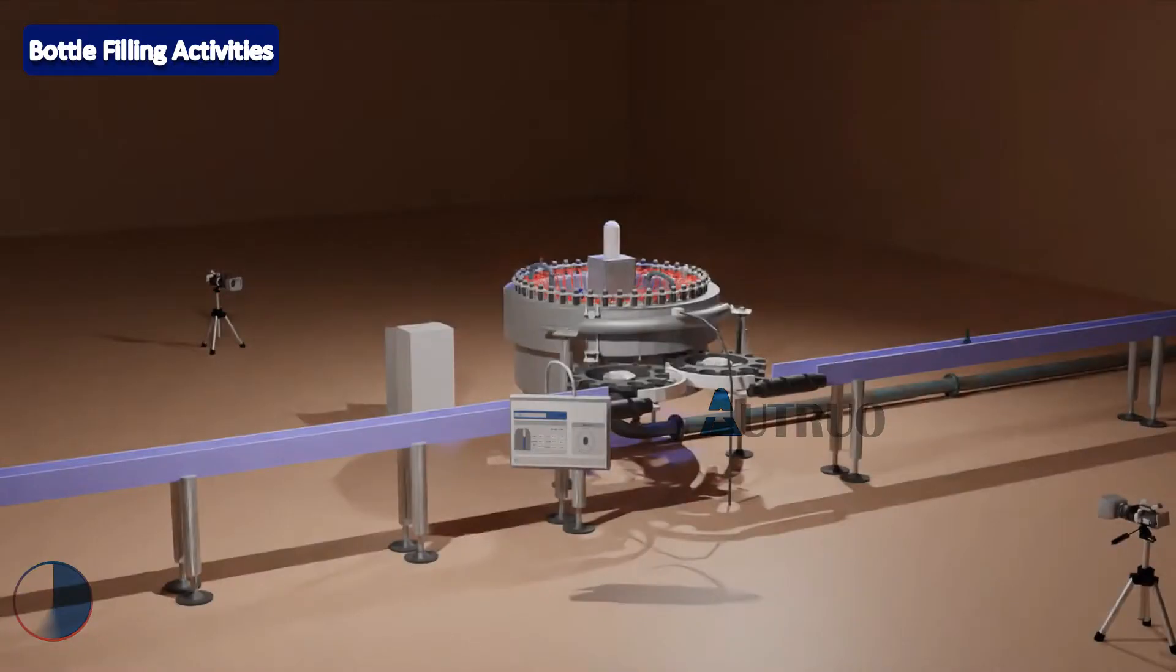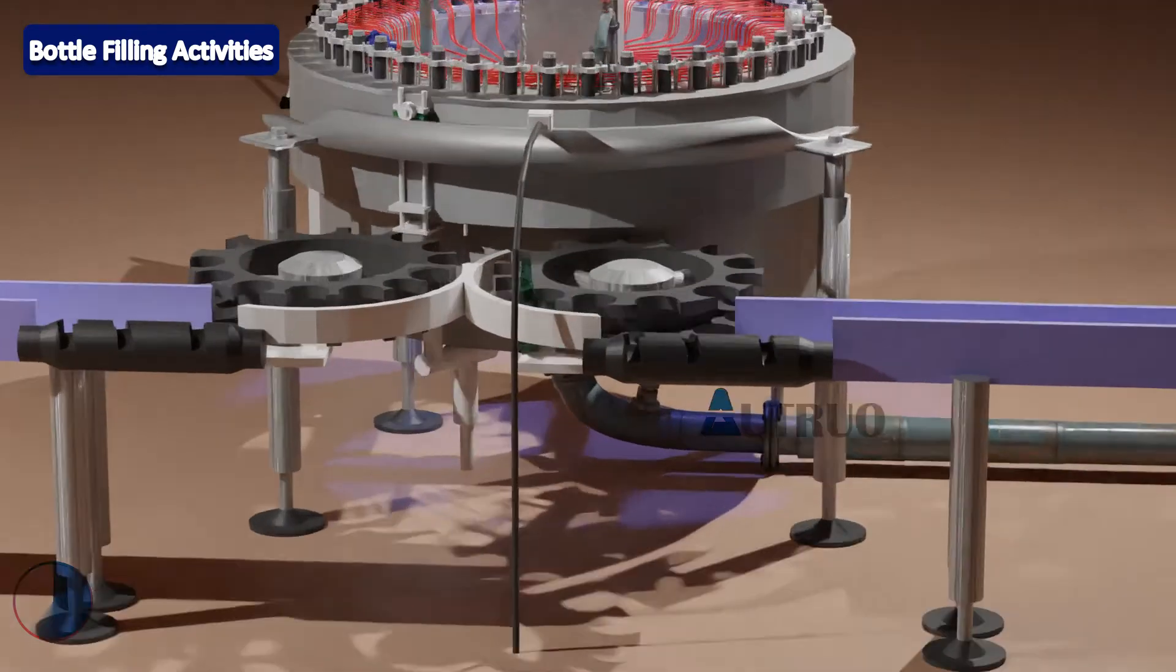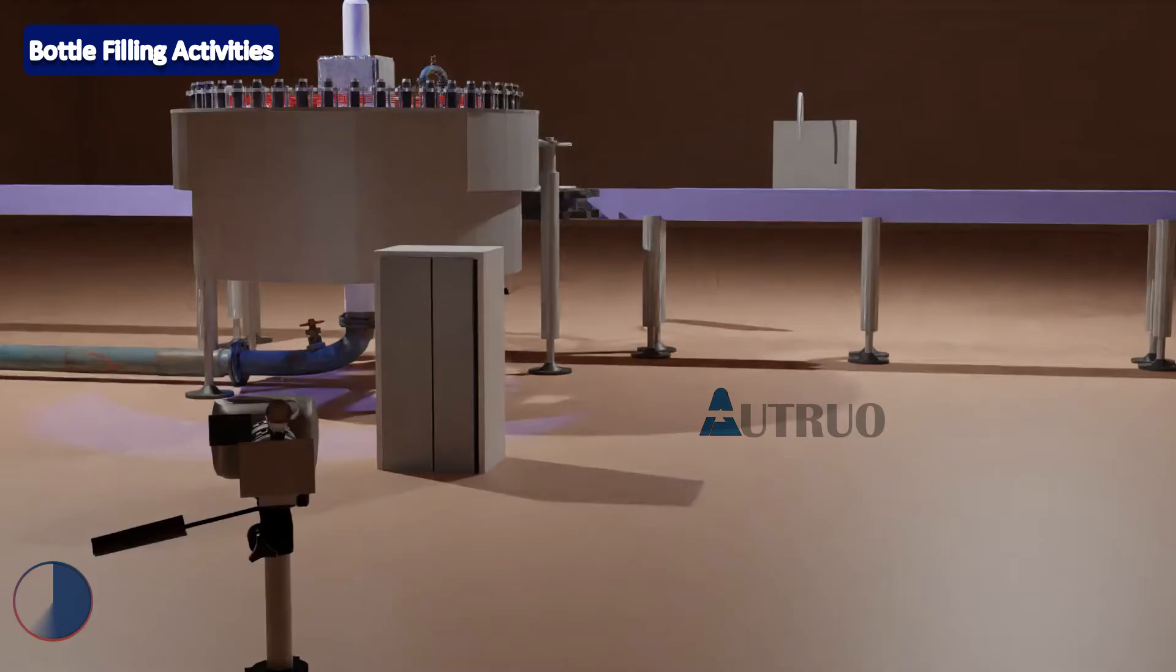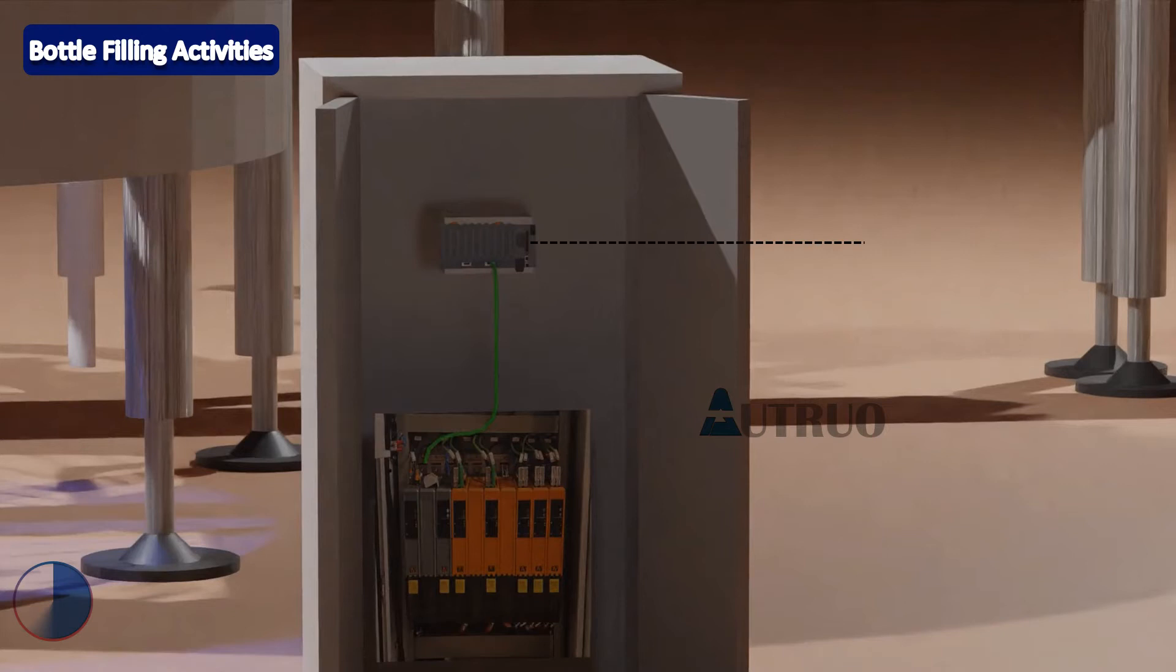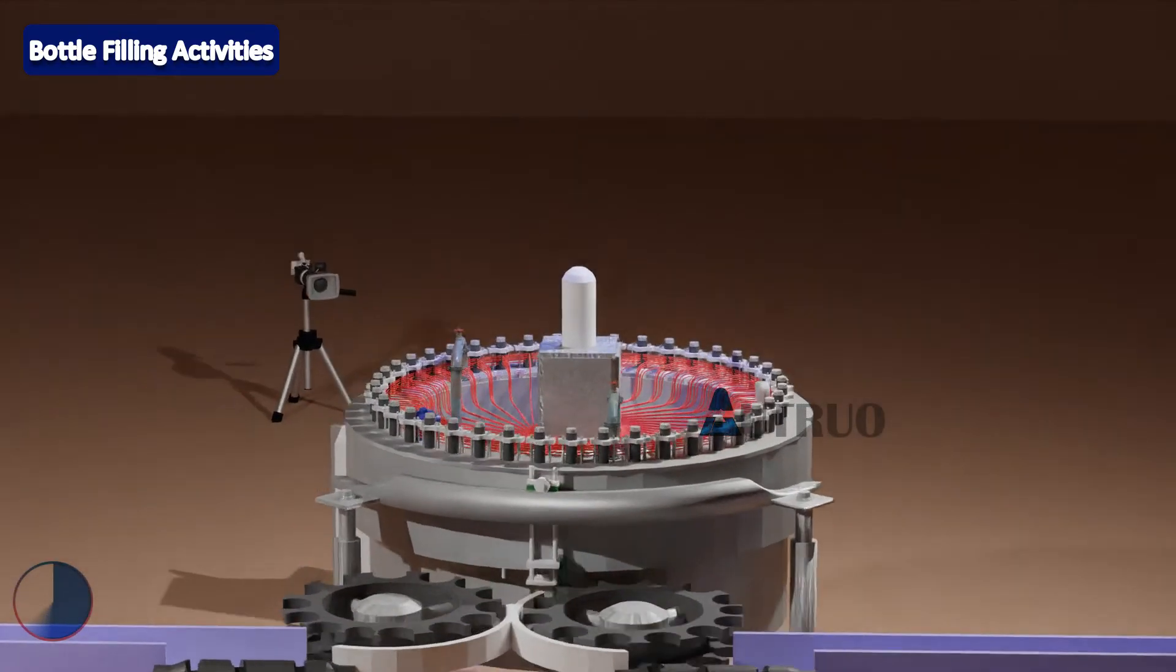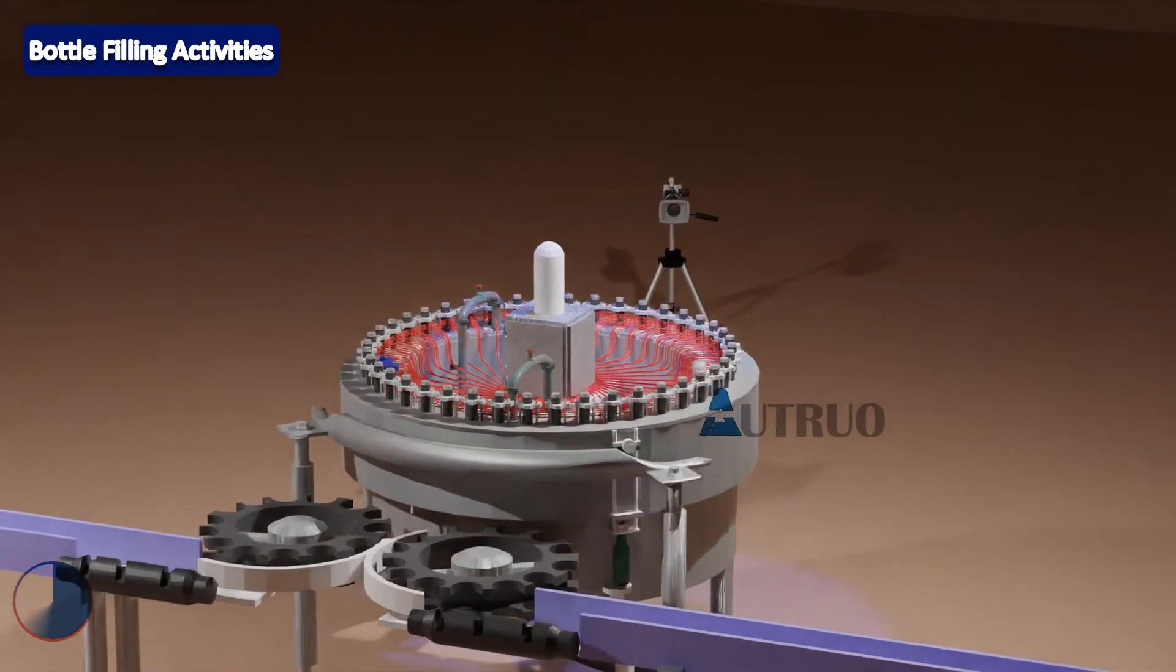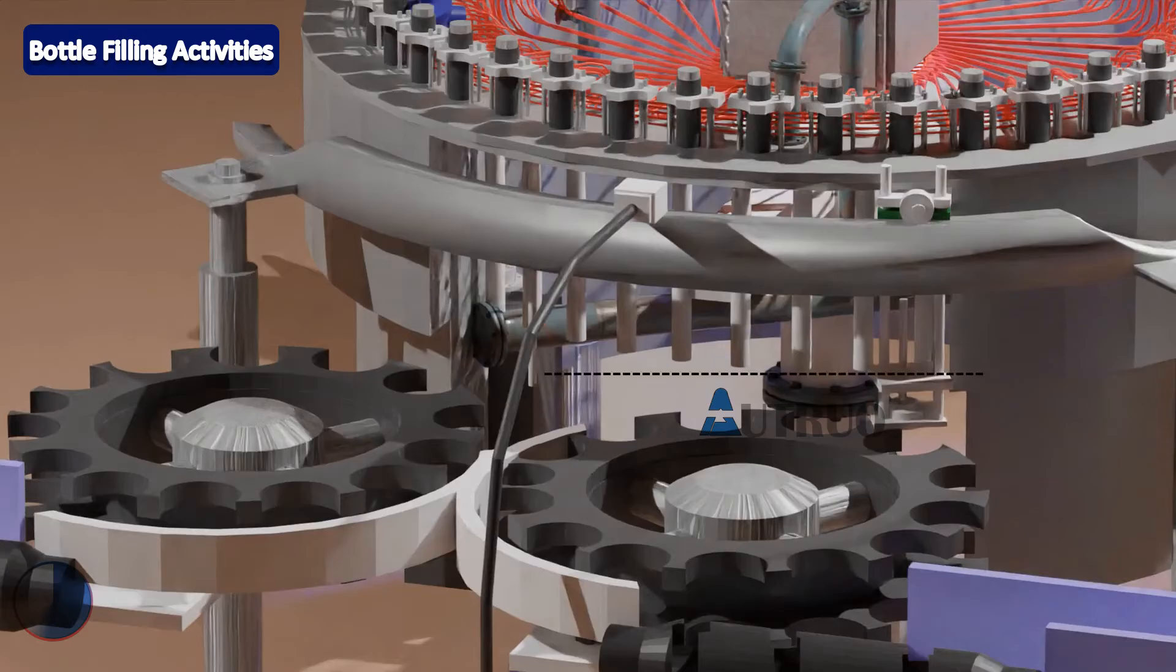Filling process is triggered by a sensor at the inlet of the filler. This sensor is known as bottle presence sensor. As soon as the sensor is triggered, the PLC, which is the B&R X20 CPU, will create a shift register. This register will be used to automate the filling of the bottle with beverage or alcohol as the bottle moves along its axis.